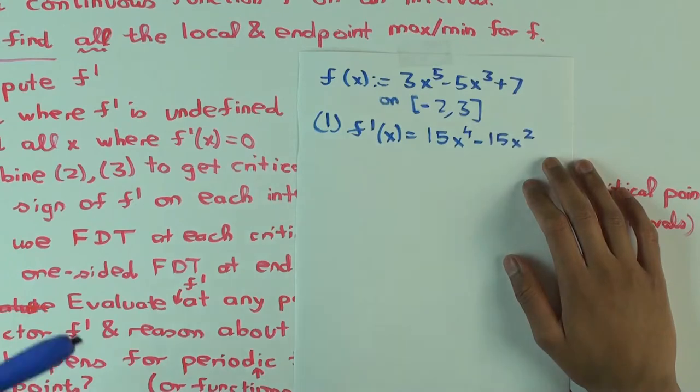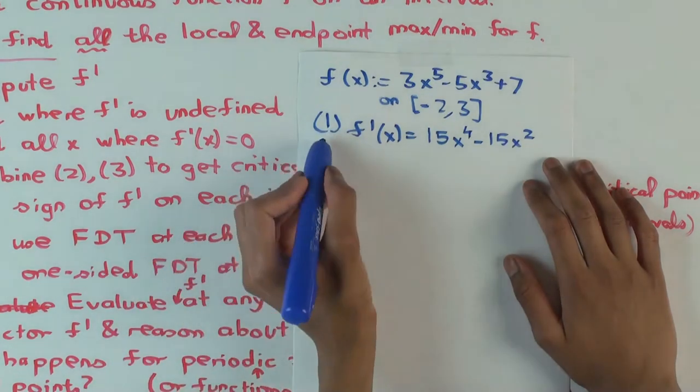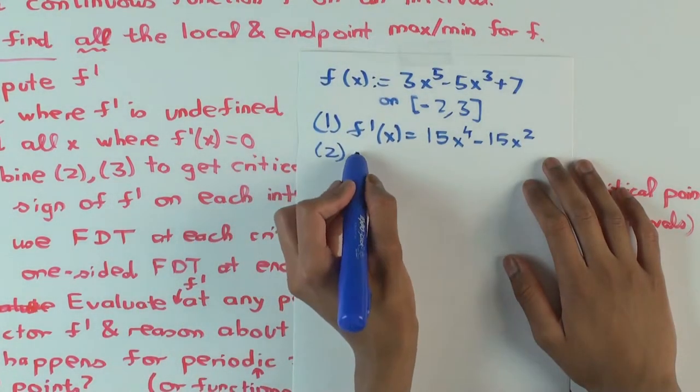Now since you have polynomials, we don't have to worry about step 2. Step 2, no points.